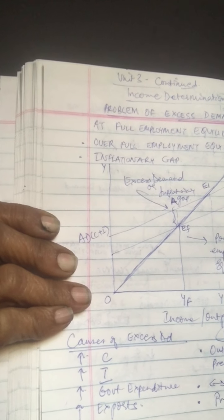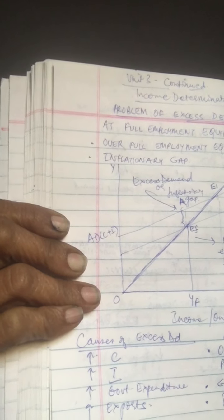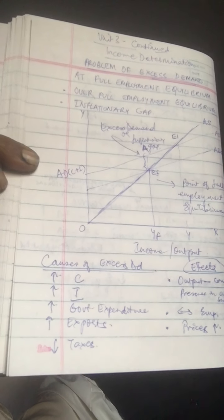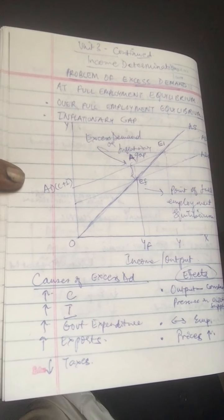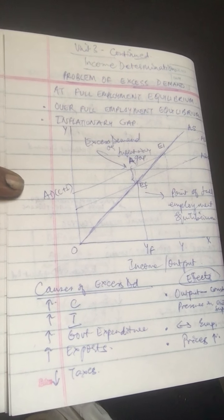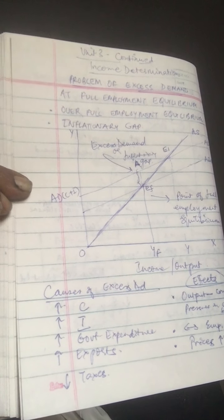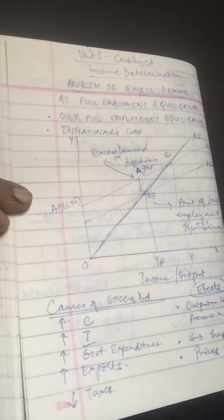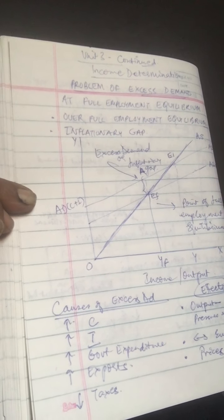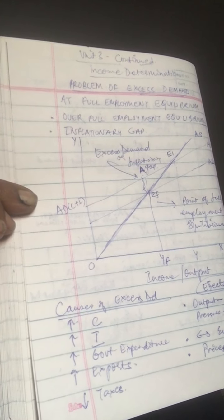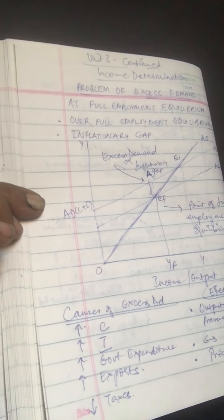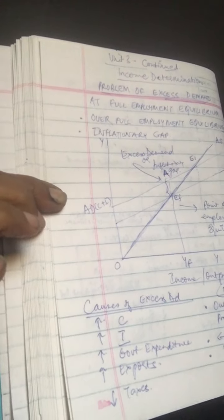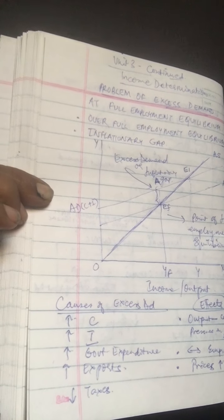In an open economy, additional factors may cause excess demand. These include an increase in government expenditure for development and welfare purposes. Excess demand may also arise when demand for exports increases due to relatively low prices of domestic goods or a fall in the exchange rate for domestic currency. A cut in taxes by the government may also lead to an increase in disposable income, and hence an increase in consumption demand.